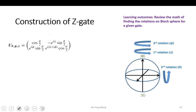and then rotate about the Z-axis by phi. So actually I did not change it, but I want to make it more general. This is not just a Z-gate — I want to construct a phase shift-gate.